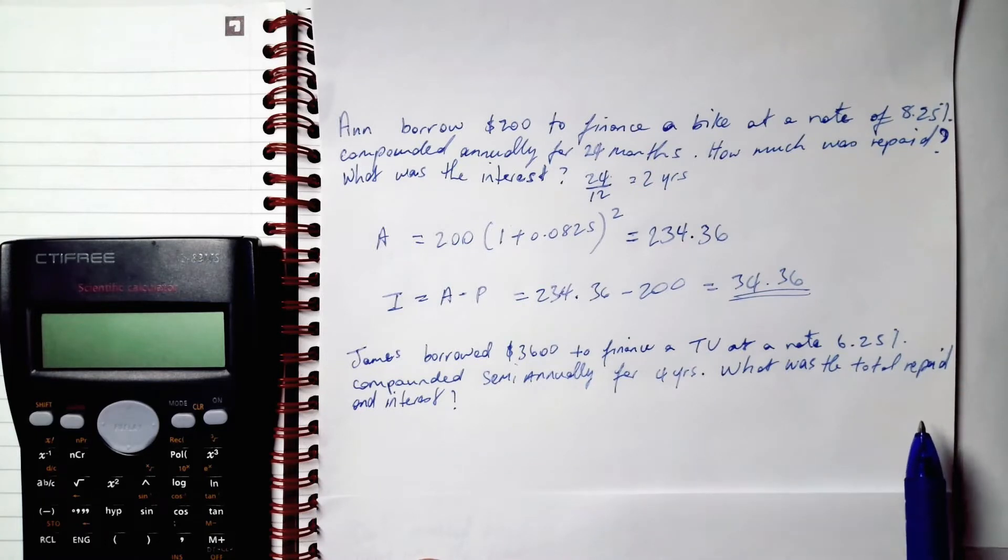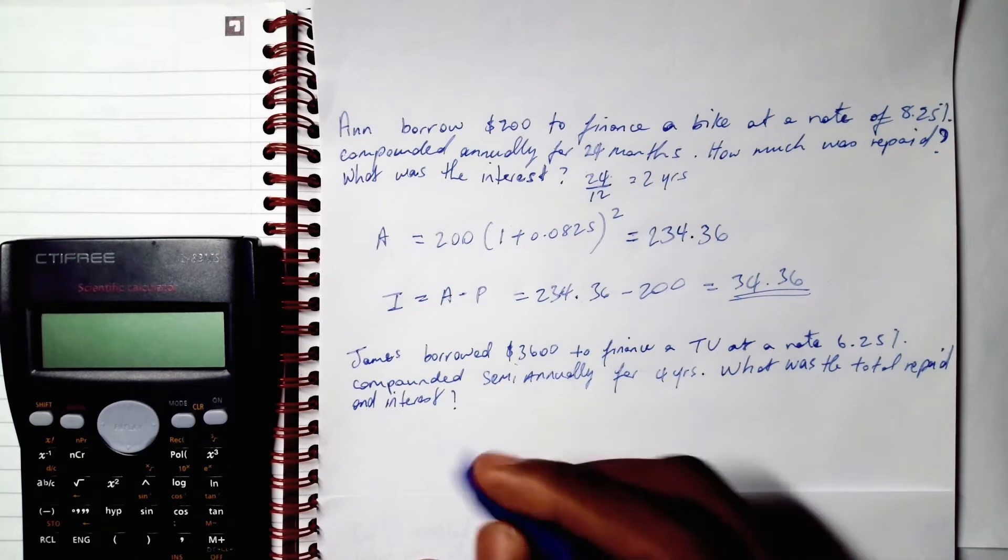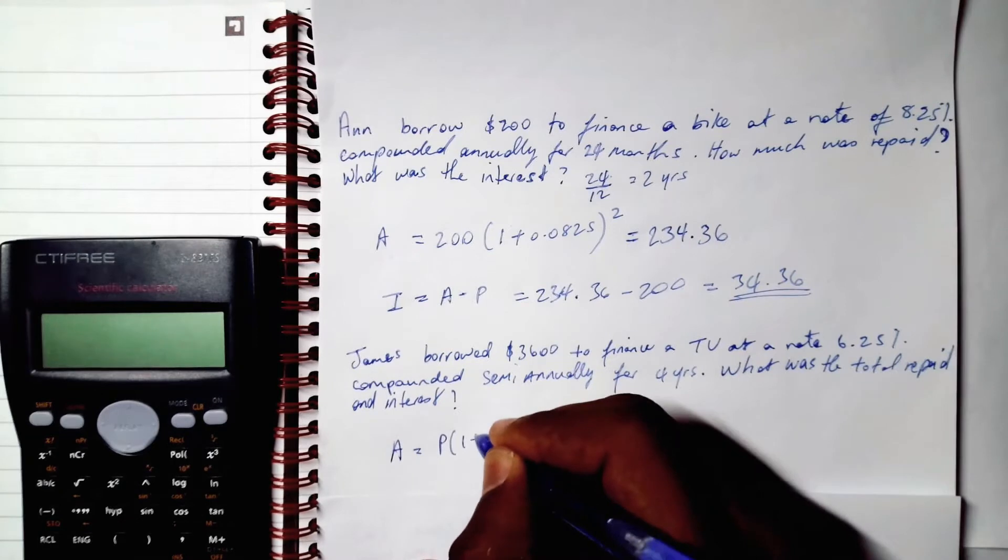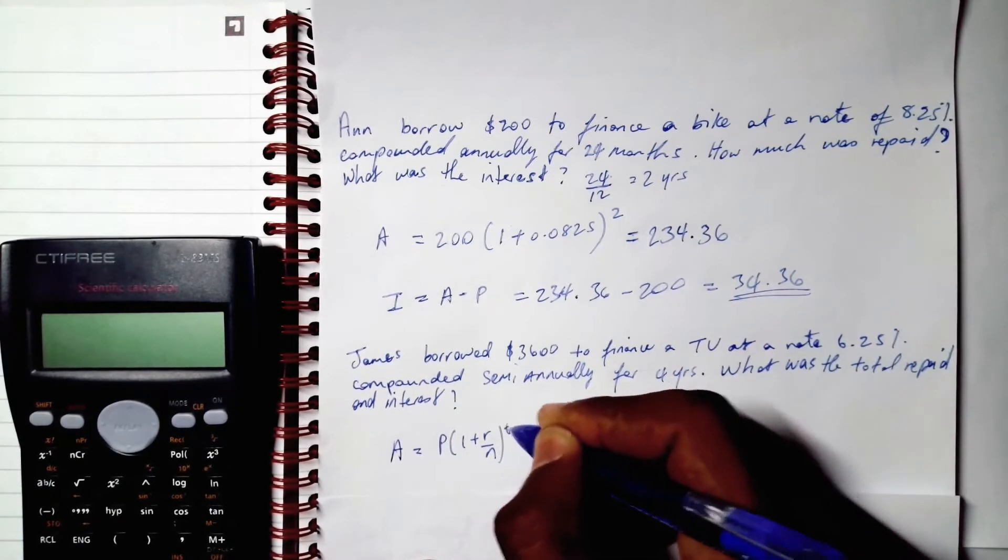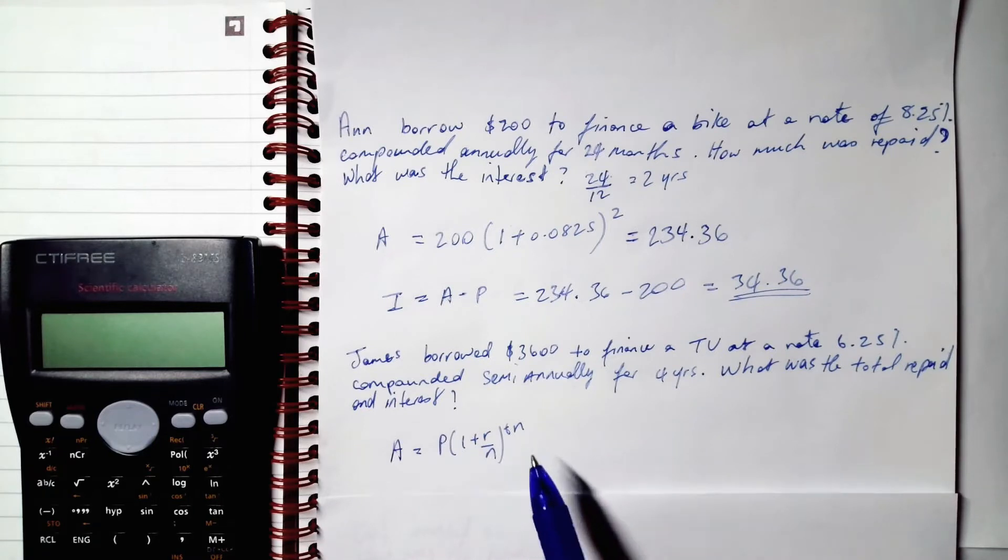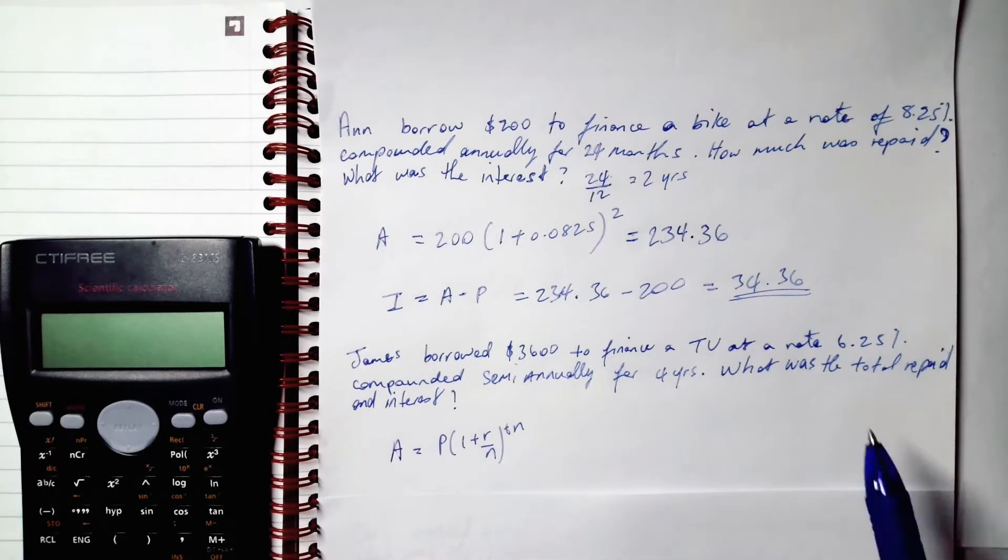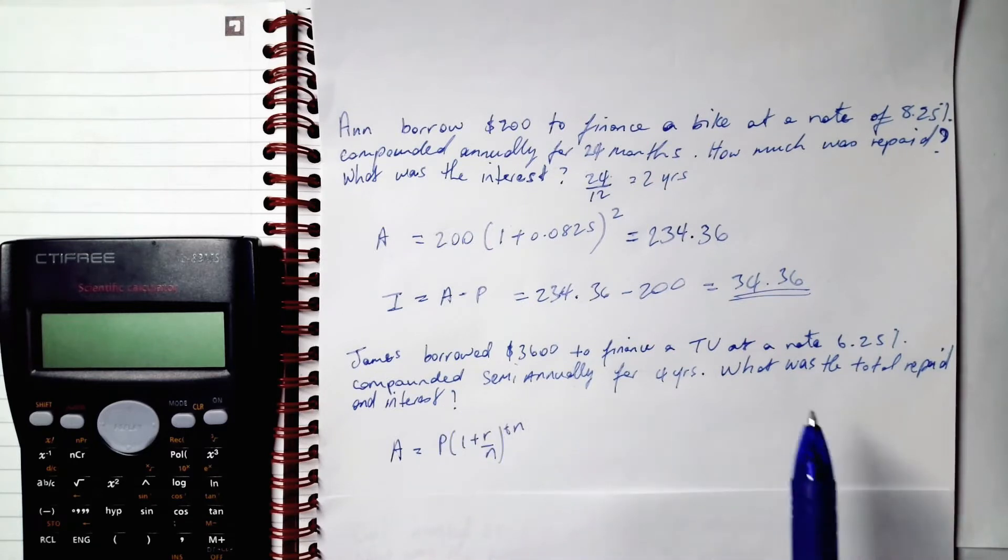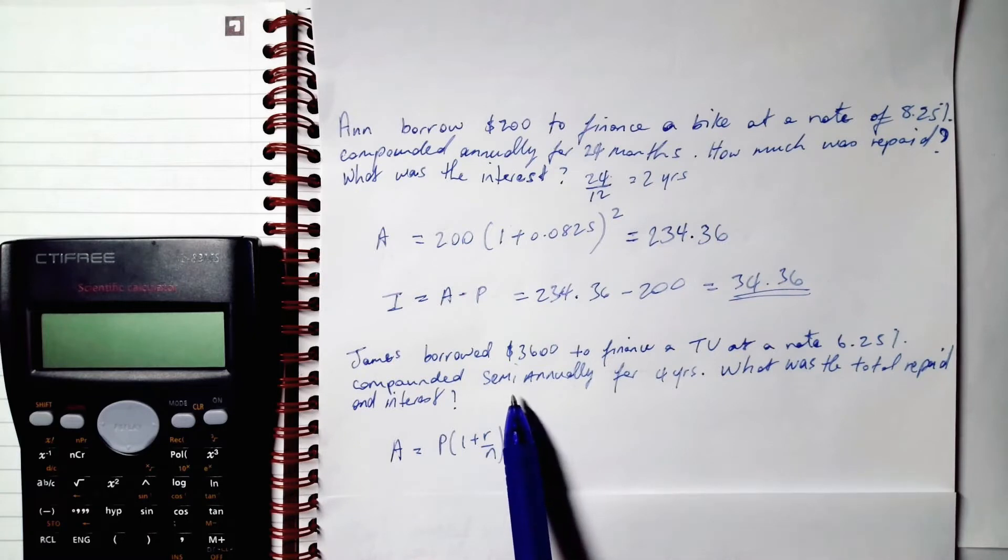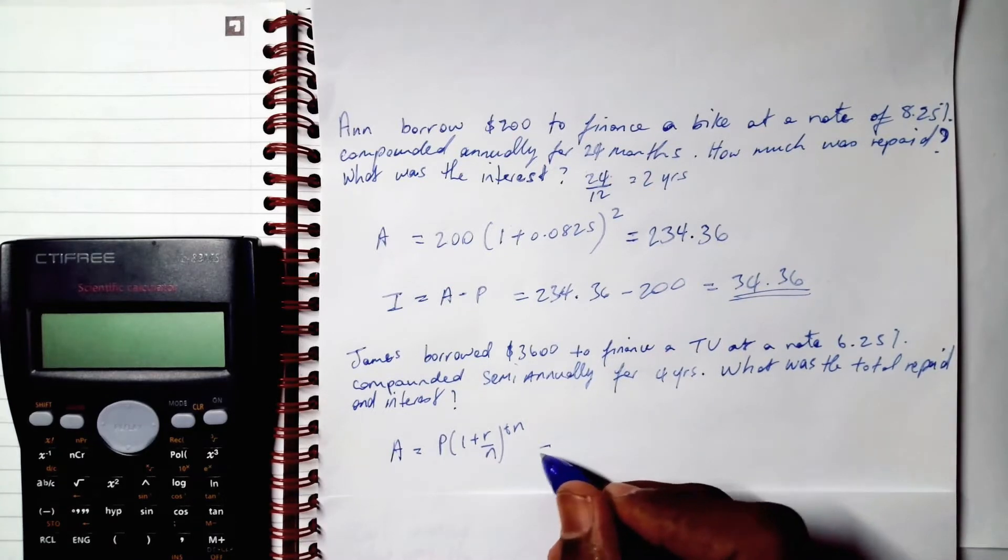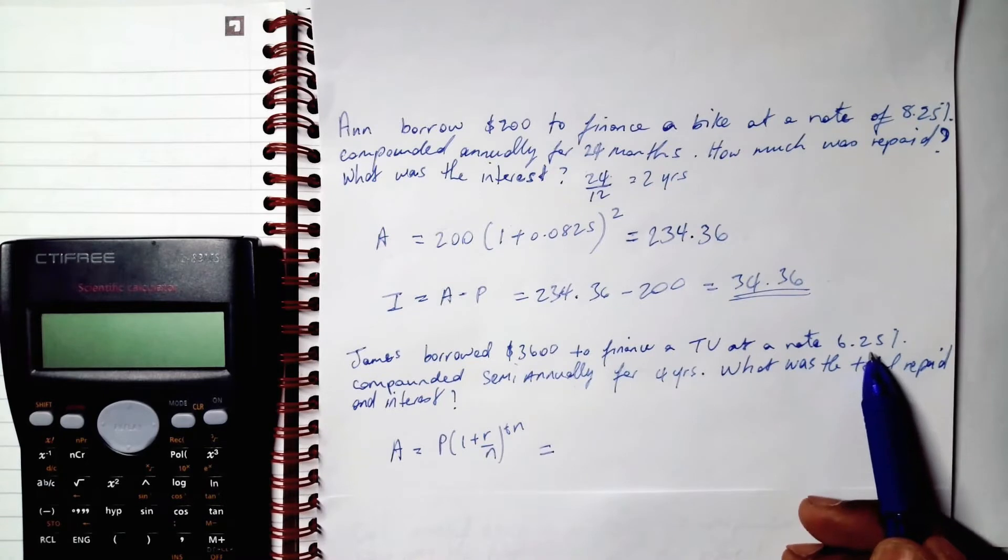So in this case it's compounded semi-annually, so every six months the interest rate will compound. Therefore n, the formula is A = P(1 + r/n)^(t×n). So n in this case, both n's will be 2 because the interest rate is compounded semi-annually. In other words, interest rate is compounded twice a year.